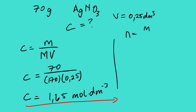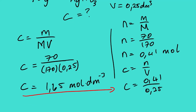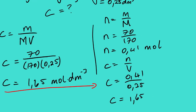Using the alternative method: n = m/M = 70 over 170, giving n = 0.41 mol. Then C = n/V = 0.41 over 0.25, and you will see that the answer is 1.65 mol per dm³.